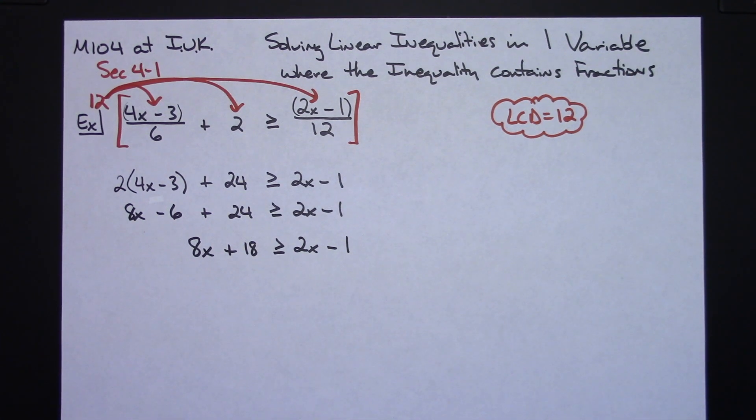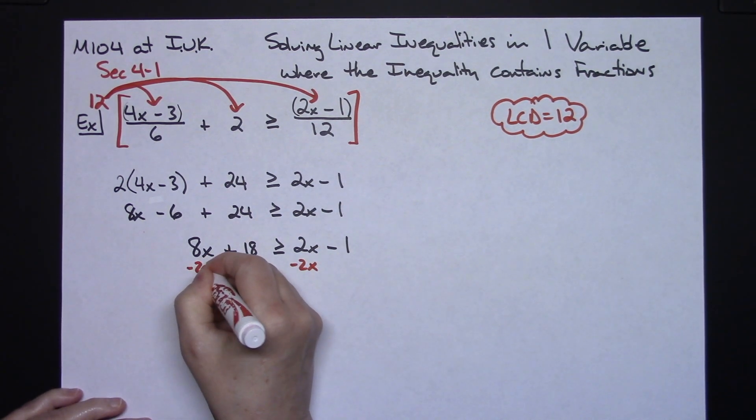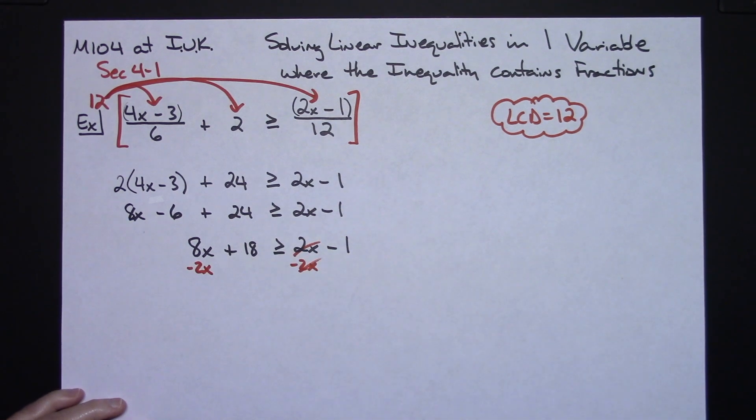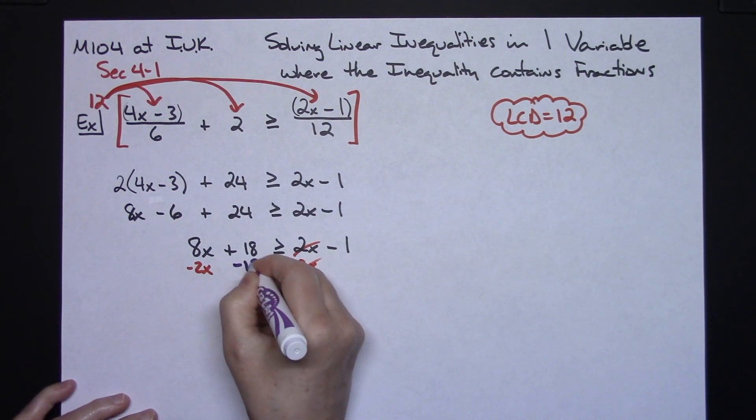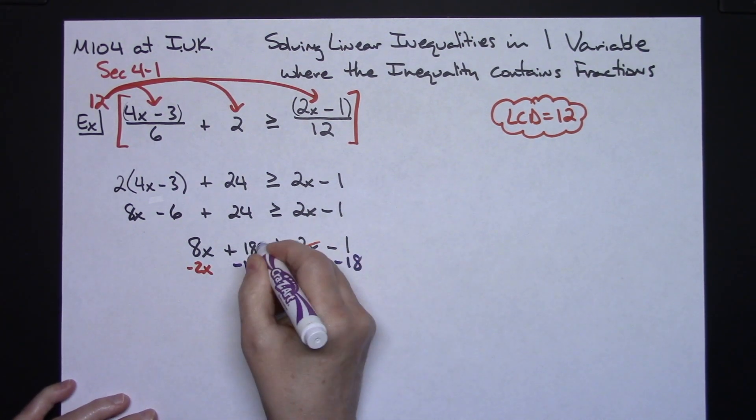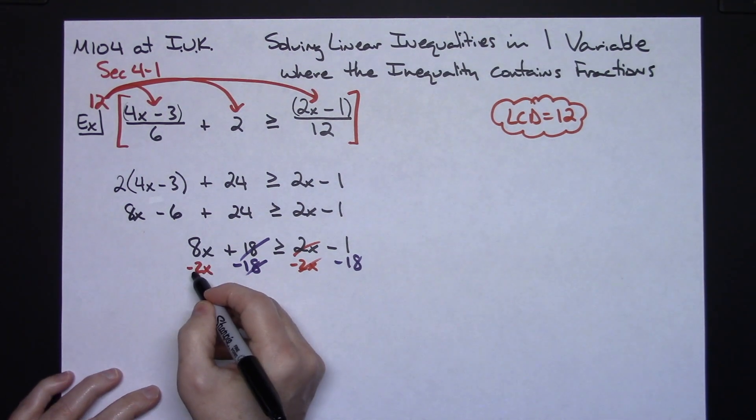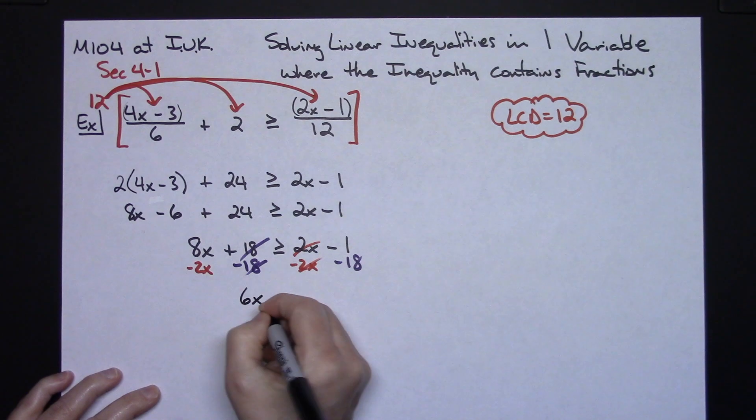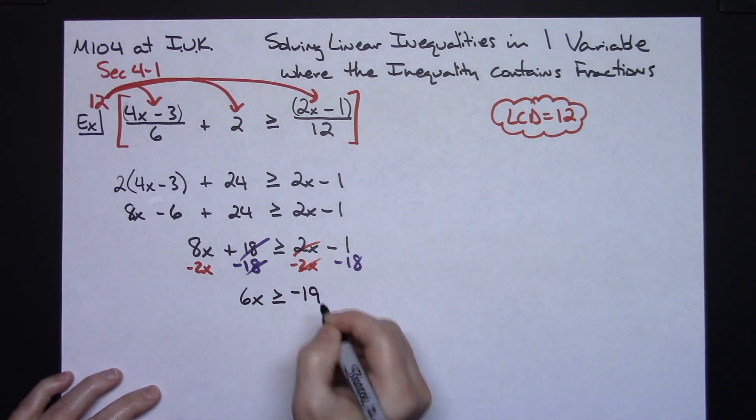At this point, I do this all in the same step. I need to move the x's to the left. I need to move the numbers to the right. So I'm going to subtract 2x from both sides of the equation. That's going to let me cross it out on the right hand side. I need the numbers to move over to the right. So I'm going to subtract 18, subtract 18 and cross out the 18s on the left hand side. So putting these two together here, I'm going to have a 6x is greater than or equal to putting this together, I'm going to have a negative 19.